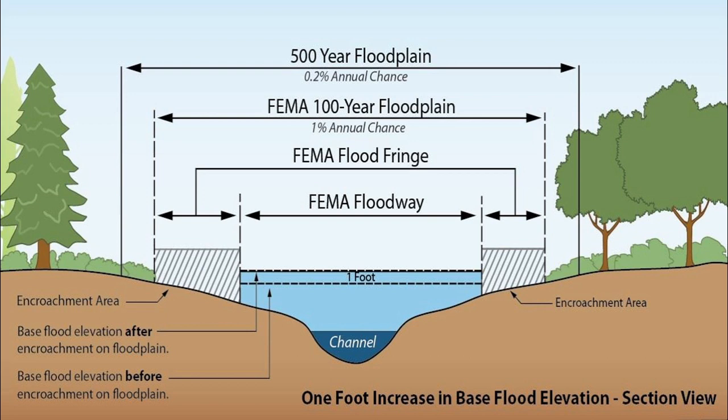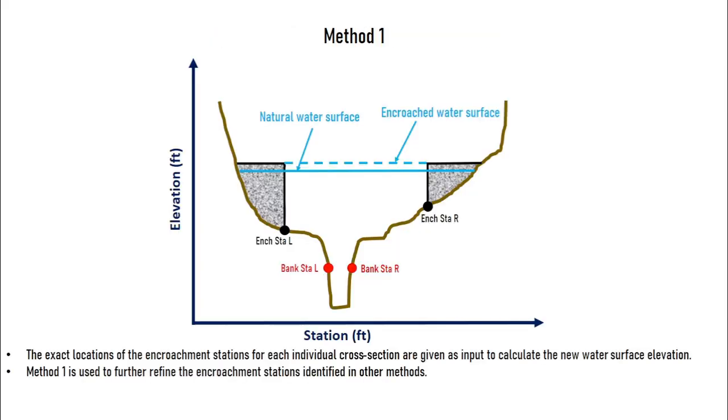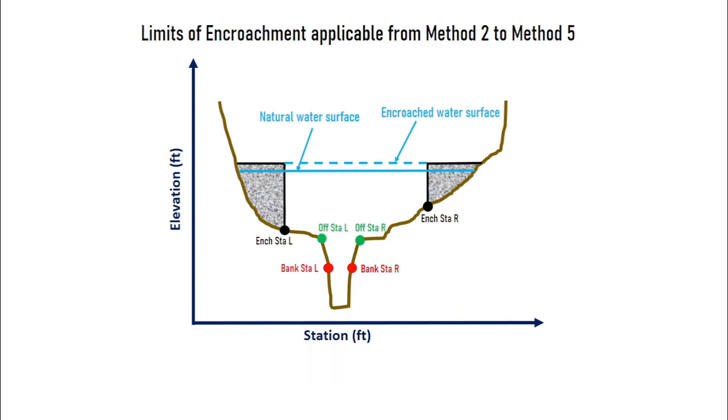Within HEC-RAS, there are 5 methods to do such analysis. In method 1, the user will straight away define the encroachment station for both the banks and program will calculate water level based on that. The methods from 2 to 5 are somewhat iterative in nature as they all calculate encroachment stations based on the constraints specified in their respective methods. So we need to define maximum limit of encroachment station.